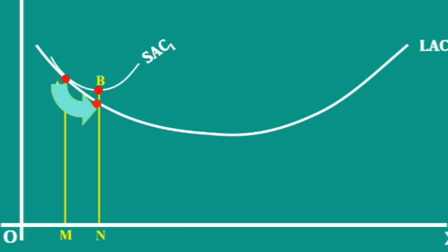The firm can slide down the long run average cost curve and reach the point D. It also represents output N.